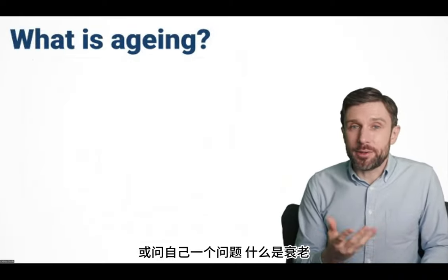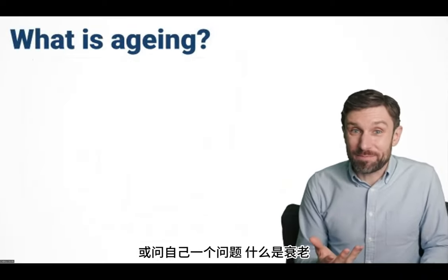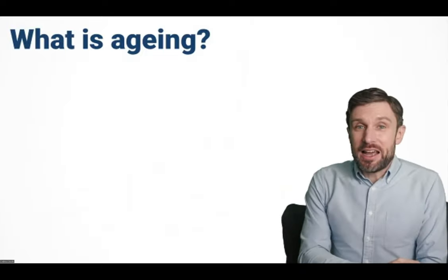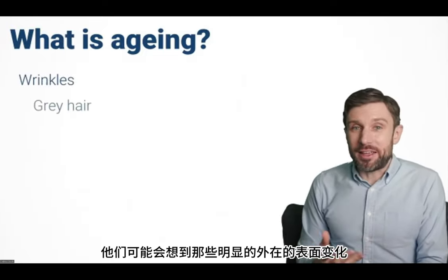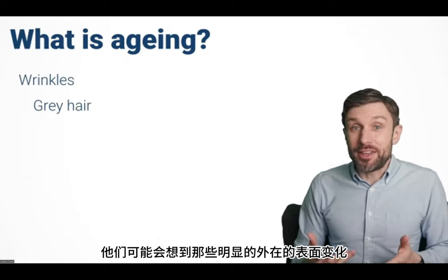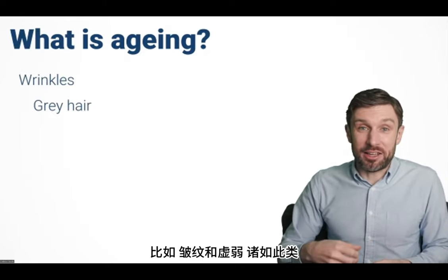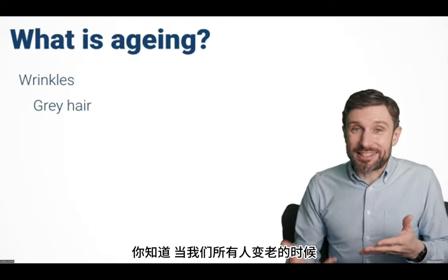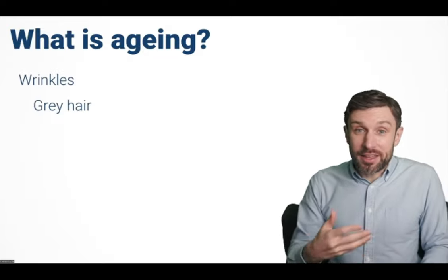Looking at a similar graph, we could ask: what is aging? What is it that's causing that increase in risk of death? When most people think of aging, they probably think of the obvious external cosmetic signs — things like wrinkles and frailty — the things we can see externally when we age.